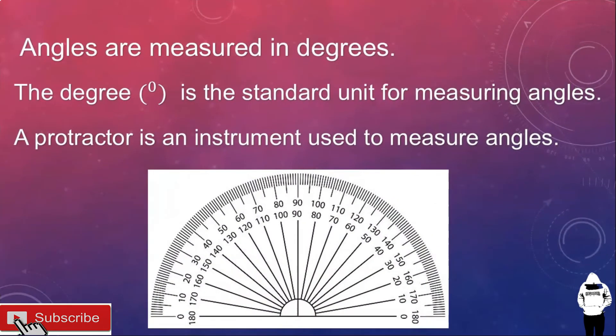Angles are measured in degrees. The degree is the standard unit for measuring angles. A protractor is an instrument used to measure angles.